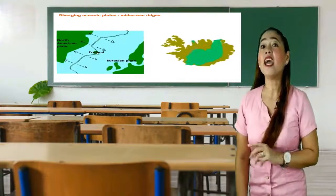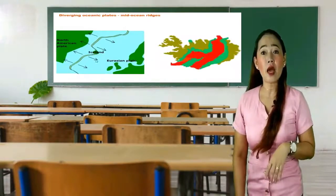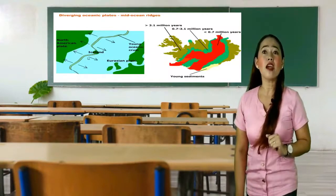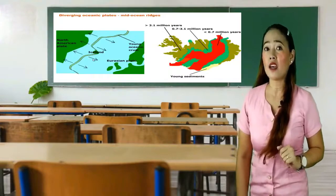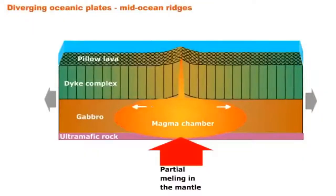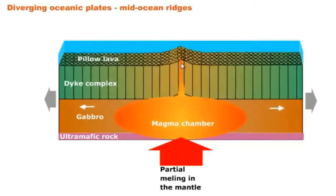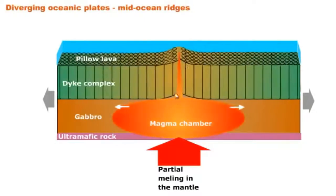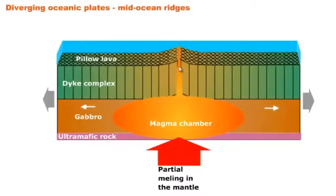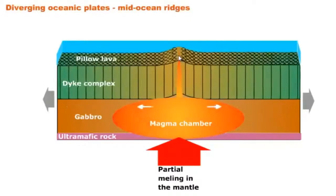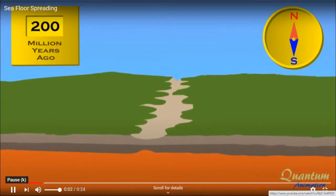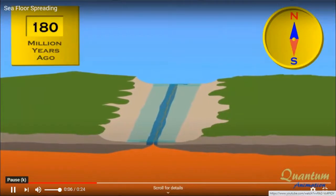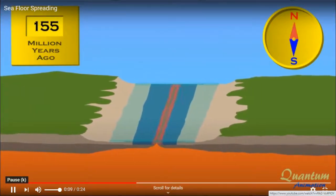As the plates move away, the gap between them increases. Materials from the mantle may rise, filling up the space. These materials pile up near the tension zone, forming a mountain-like structure called oceanic ridges. New materials from the mantle may push the old ones, and the filled-up space between the plates becomes a new seafloor. This process is known as seafloor spreading.